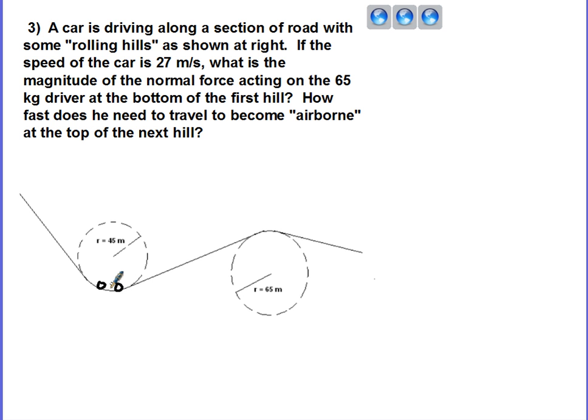What's the magnitude of the normal force acting on the 65 kilogram driver at the bottom of the first hill? And then finally how fast does he need to travel to become airborne at the top of the next hill?